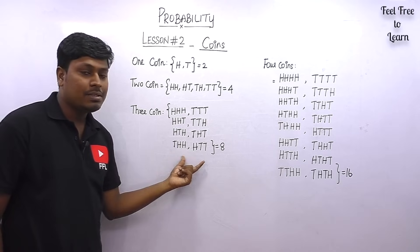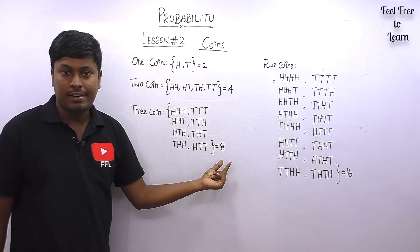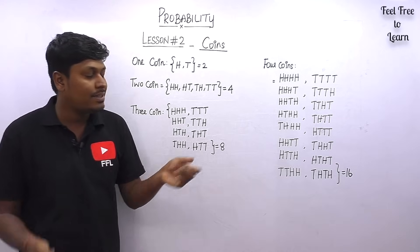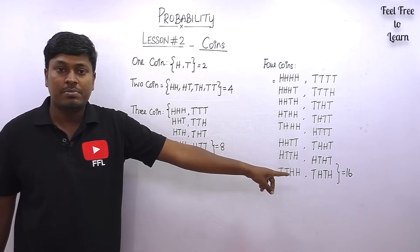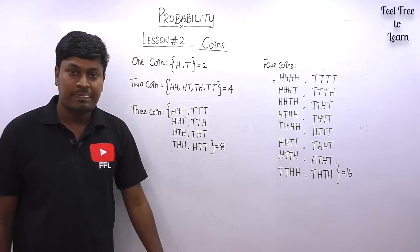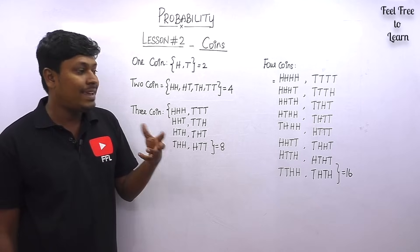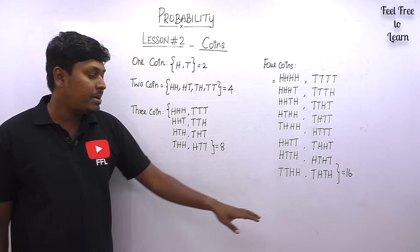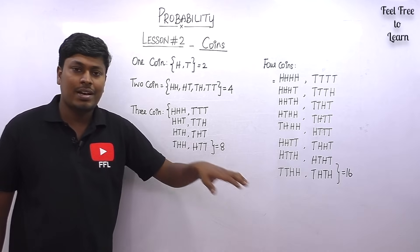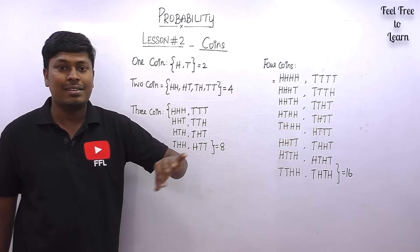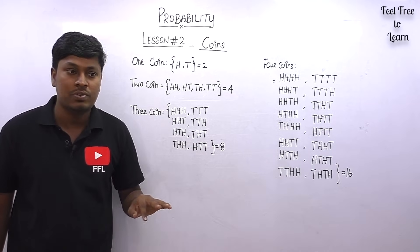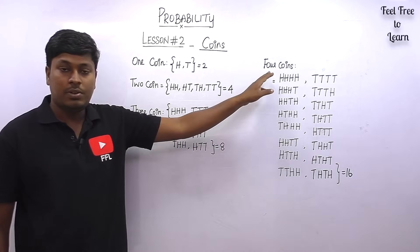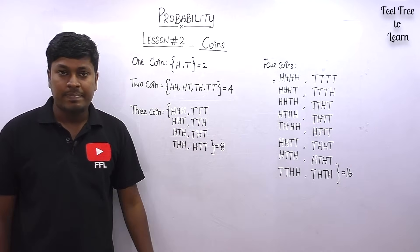Similarly, if three coins are tossed simultaneously, the total possibilities are eight. If four coins are tossed, the total possibilities are 16. For CAT or GATE level exams, prepare up to five coins; for other government or IT sector interviews, four coins is sufficient.